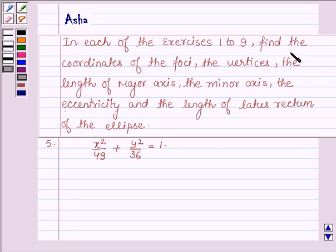In exercises 1 to 9, find the coordinates of the foci, the vertices, the length of the major axis, the minor axis, the eccentricity, and the length of latus rectum.